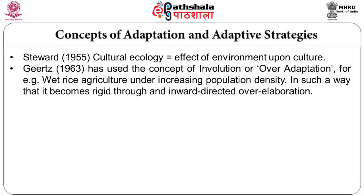Geerts described involution as when an established form — for example, wet rice agriculture under increasing population density — becomes rigid through an inward directed over-elaboration. Eric Wolf in 1966 gave the concept of ecotype: the ecological adaptation of the peasantry consists of a set of food transfers and devices used to harness inorganic sources of energy to productive processes. Together, these sets make up a system of energy transfers from environment to humans, called an ecotype.